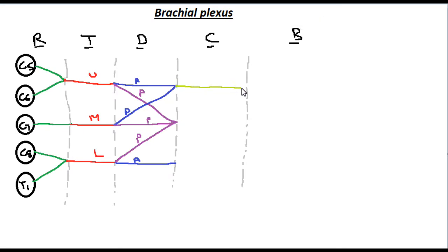This division will form the cords. All posterior together they will form the posterior cord. Most medial side is the medial cord.